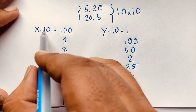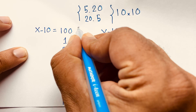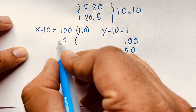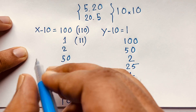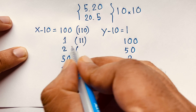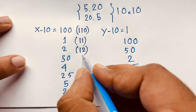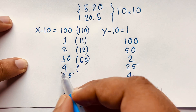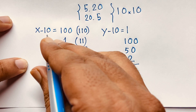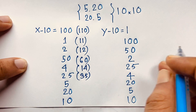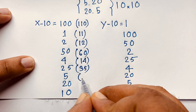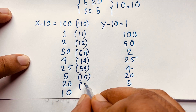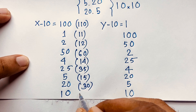When x minus 10 equals 100, x equals 110. When x minus 10 equals 1, x equals 11. When x minus 10 equals 2, x equals 12. When x minus 10 equals 50, x equals 60. When x minus 10 equals 20, x equals 30. When x minus 10 equals 10, x equals 20.